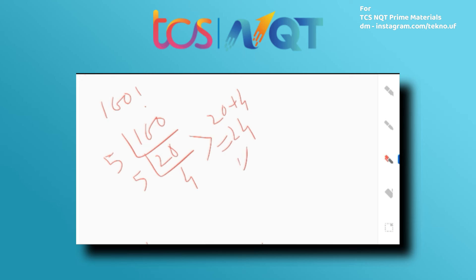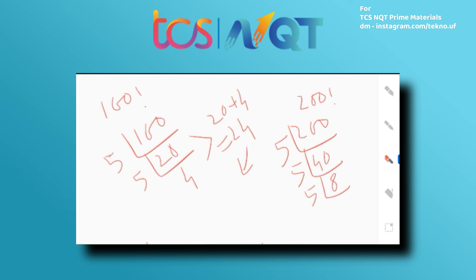If the number is 200!, divide by 5 repeatedly: 200 ÷ 5 = 40, 40 ÷ 5 = 8, 8 ÷ 5 = 1 (remainder 3, ignore). Add the quotients: 40 + 8 + 1 = 49. So the total number of trailing zeros in 200! is 49.